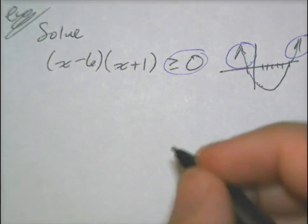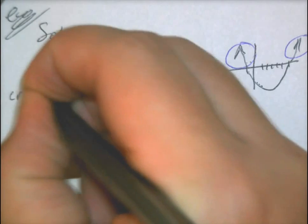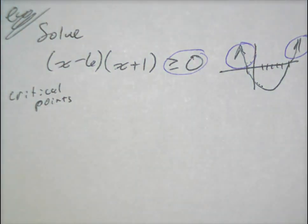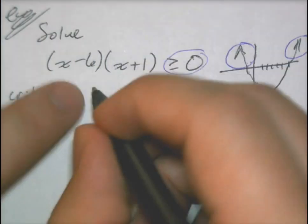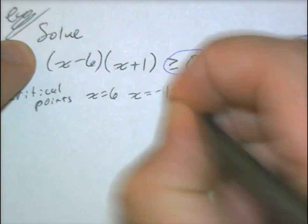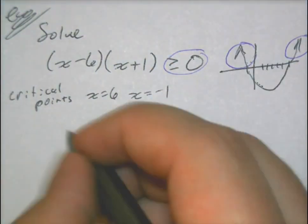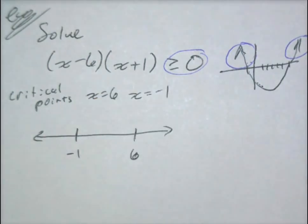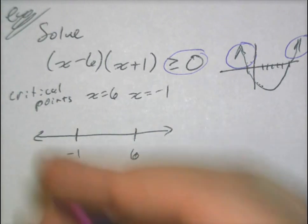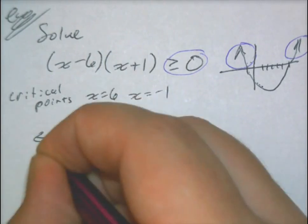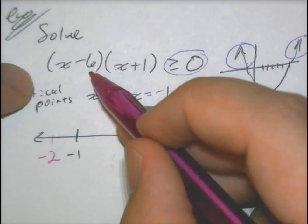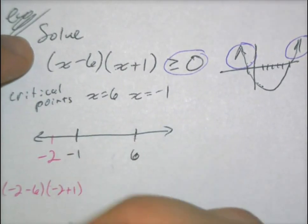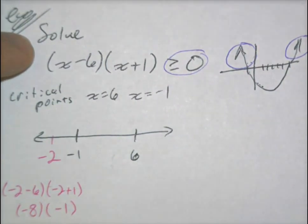What we usually do is put it on a number line. I know my critical points — these are points that can be zeros. So with this one, I know that critical points that matter are 6 and negative 1, because that's where it changes. I put those on a number line. We're going to test the intervals around this. A number less than negative 1 would be negative 2. If I substitute negative 2, I have (negative 2 minus 6)(negative 2 plus 1), which is negative 8 times negative 1, giving me positive 8.